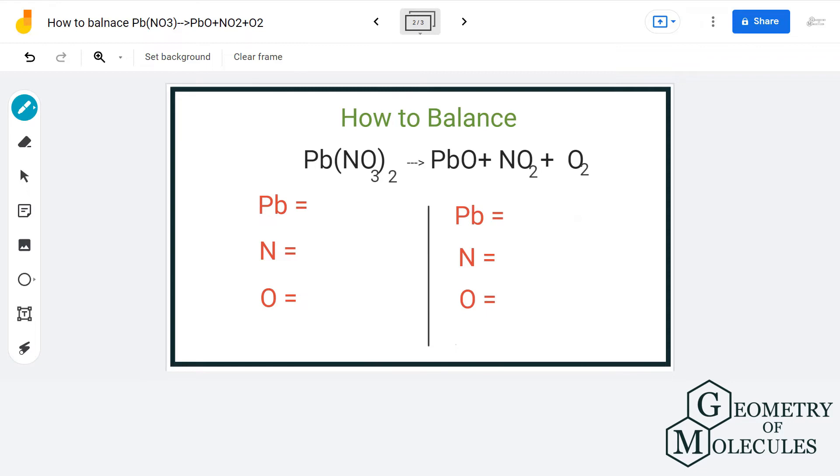To balance this equation, first we will look at the total number of atoms on both sides of the equation. On the reactant side, we have one lead, two nitrogen, and six oxygen atoms.